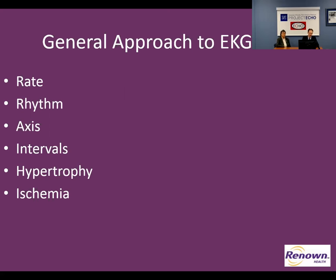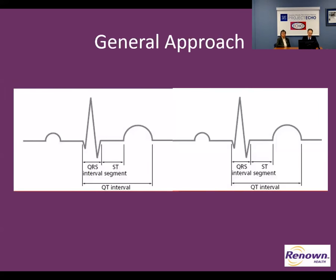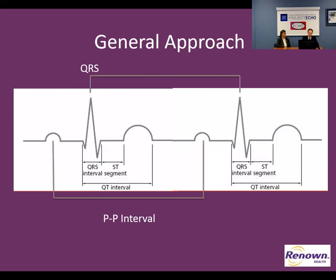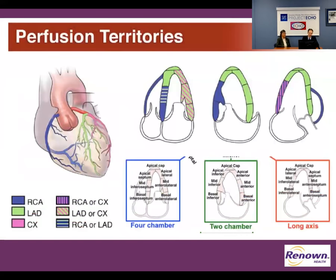Ischemia is the first thing that's going to catch your eye, so we'll go with that. Talking about your general intervals: QRS to QRS is your RR interval, PP interval may be different if you're not in sinus rhythm or you have heart block. Your P wave axis can be different than your QRS axis, as we've previously discussed.